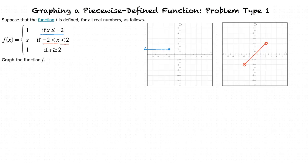Why are the circles at x equals negative 2 and x equals positive 2 not shaded in? The circles at x is equal to negative 2 and x is equal to 2 are not shaded in because our initial problem states that x is greater than negative 2 but less than 2, meaning those y values are not included within our interval. So whenever a question says that a domain is less than or equal to, or greater than or equal to, the circle at the end of the graph is completely filled in. And when we are told that the domain is just less than or greater than, the circle at the end of the graph is left open. Exactly — sounds like you've got it down.